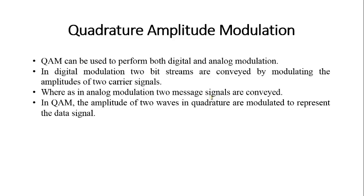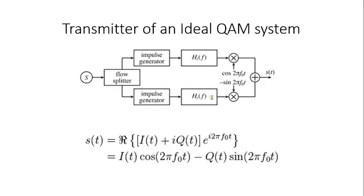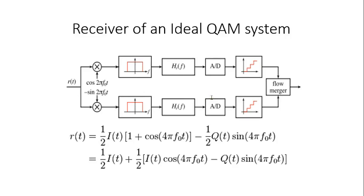Now we move on to quadrature amplitude modulation. In QAM, we can do both digital and analog modulation. In digital modulation, two bit streams are conveyed by modulating the amplitudes of two carrier signals, whereas in analog modulation, two message signals are conveyed. In QAM, the amplitudes of two waves in quadrature are modulated to represent the data signal. This figure shows the transmitter of an ideal QAM system with the transmitter side signal equation below. This figure shows the receiver of an ideal QAM system with the equation representing the transmitted signal at the receiver end.